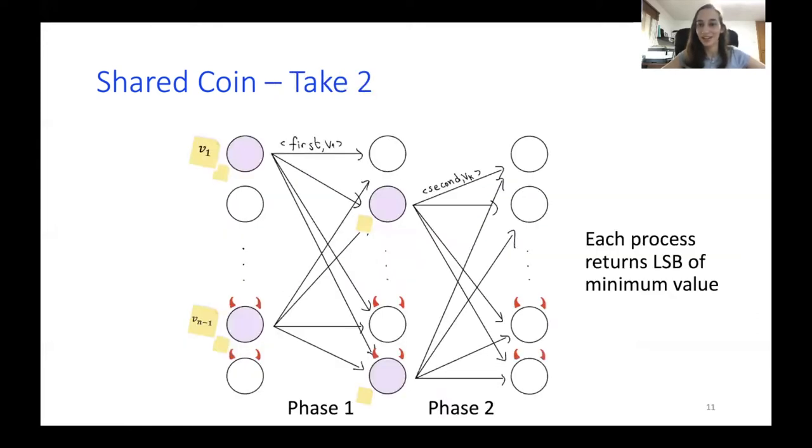So we try to do take two. And in take two, what we do is we elect committees to execute each step of the protocol. So in my drawing, the elected processes are drawn in purple. And the way processes are elected is by some local computation. And here's the second use of the VRF. Each process executes a VRF, obtains a number. And if this number is below some threshold, then this process is elected to the committee. And if not, then it is not. And only processes that are elected to the committee are sending the messages.